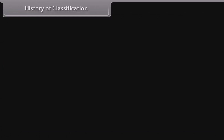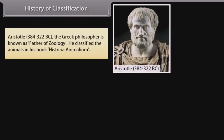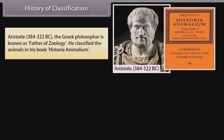History of classification. Aristotle (384–322 BC), the Greek philosopher, is known as the father of zoology. He classified animals in his book Historia Animalium.